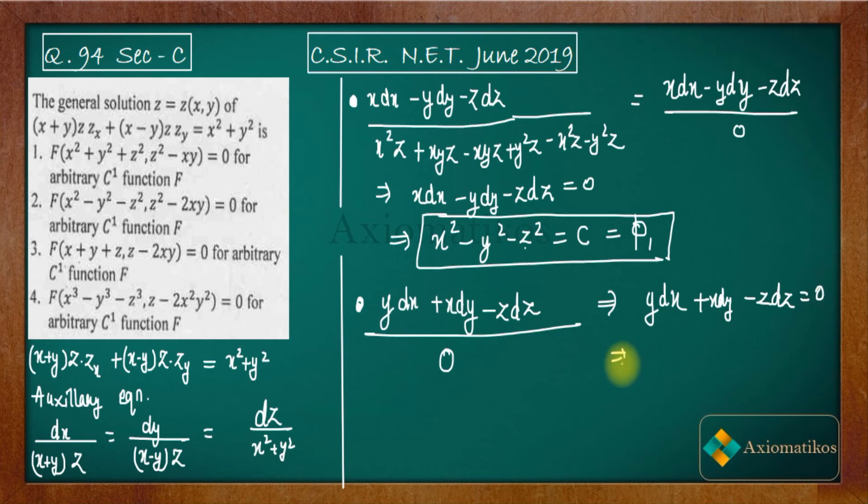If you calculate it yourself, you will get y·dx + x·dy - z·dz = 0. The important thing here is that you can write it as d(xy), and then you have -z·dz. If you integrate both sides, you will get xy - z²/2 = constant. Taking LCM, you will get 2xy - z² = constant.